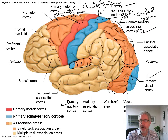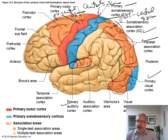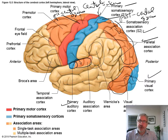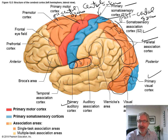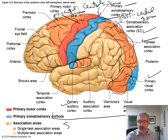We have this other region — the parietal association cortex — that takes care of lots of other association functions to do with sensory information. The back half of the brain is pretty much all involved in sensory and figuring out what to do with that sensory information.